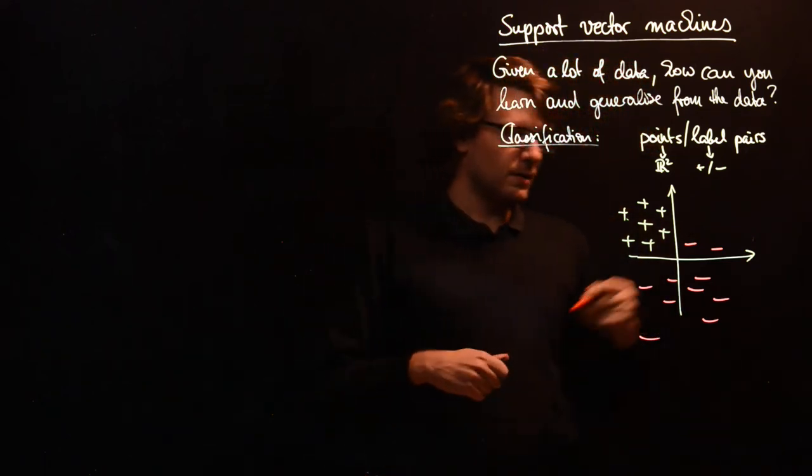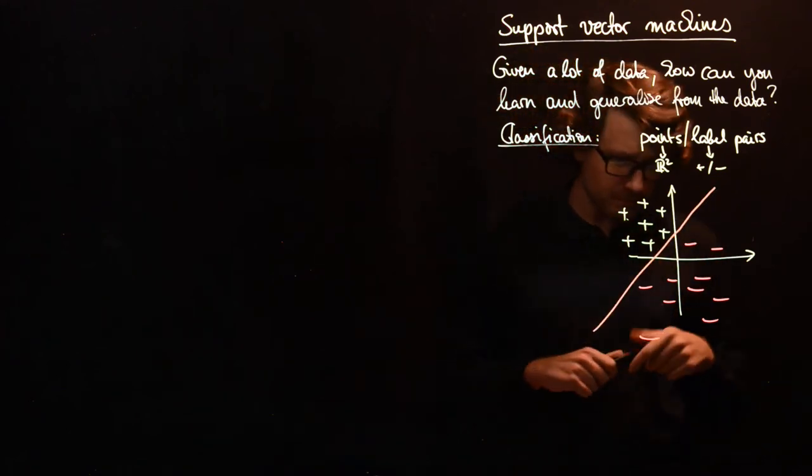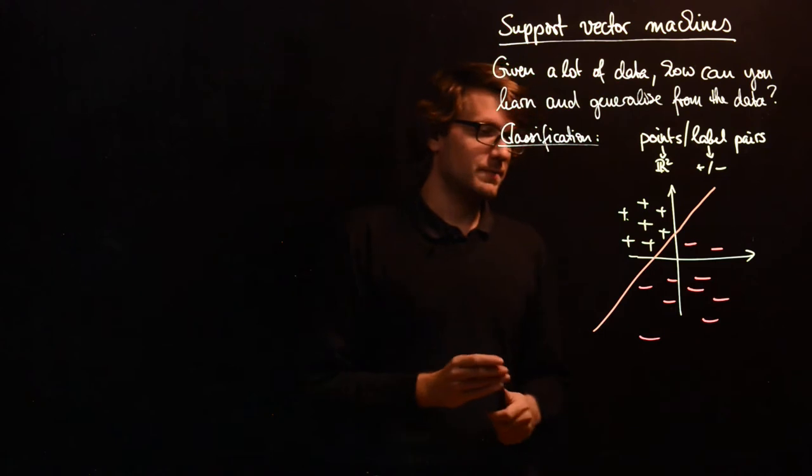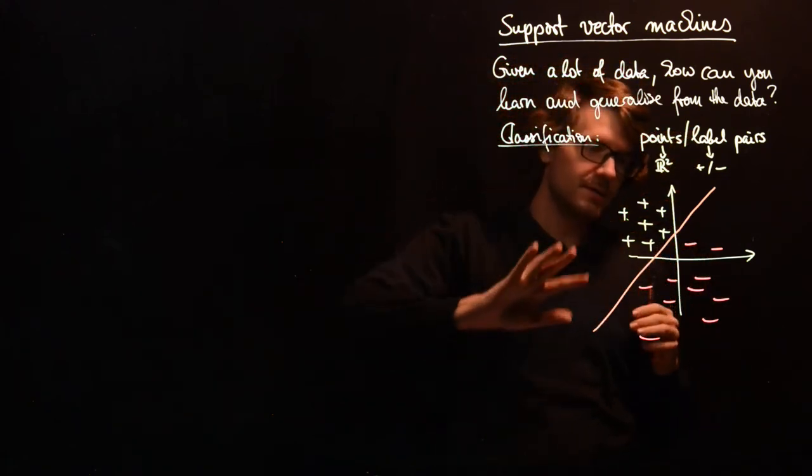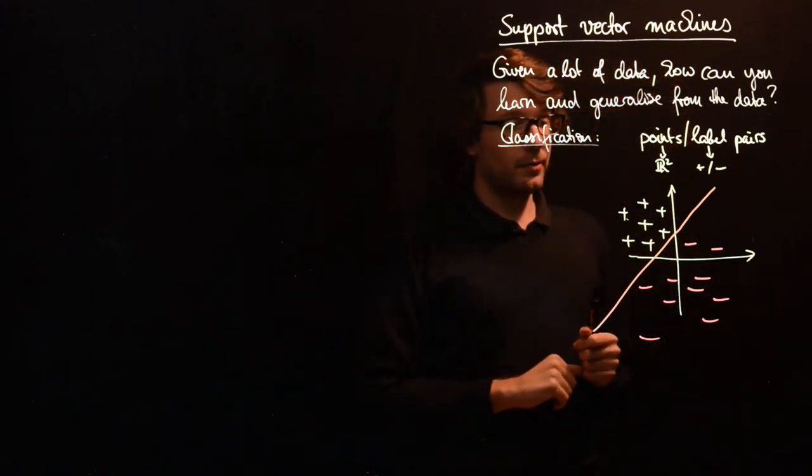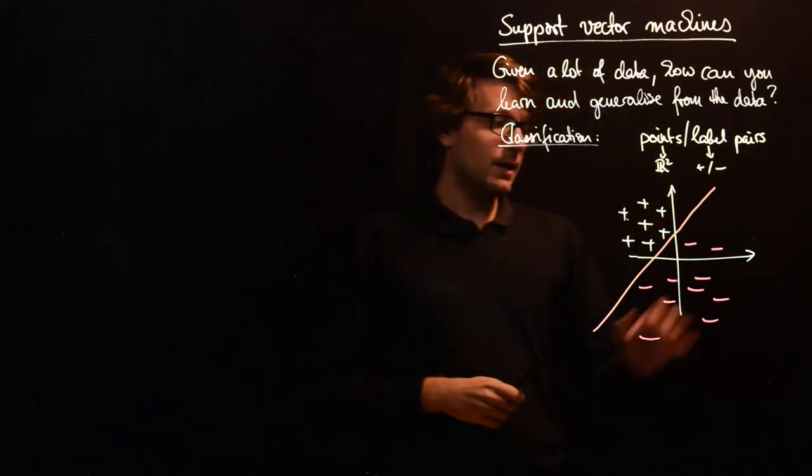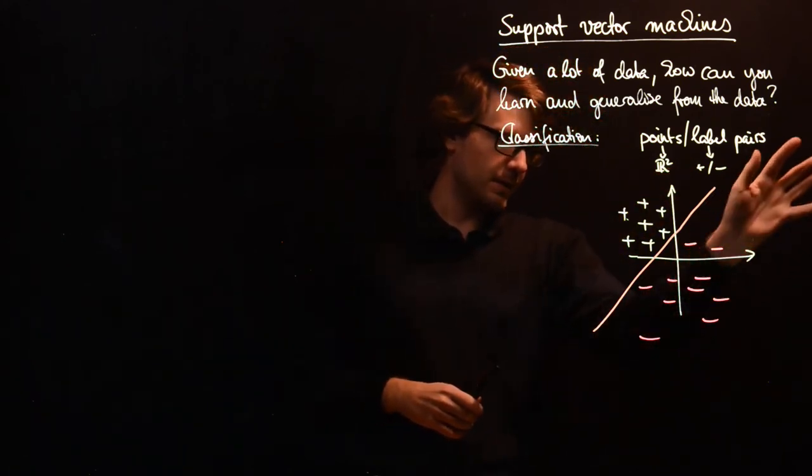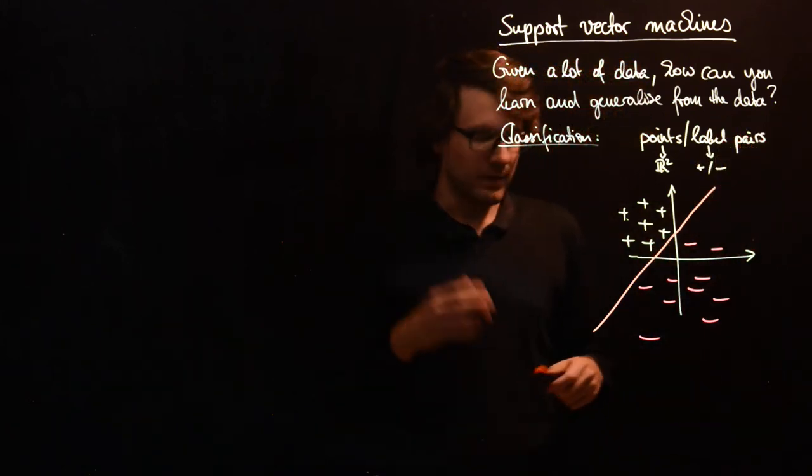And the goal is that we want to find some linear separation of these points so that we can say whenever we are in this half of the plane R² then our point will probably have the label plus one and whenever we are in this half of the plane then our point will probably have label minus one.